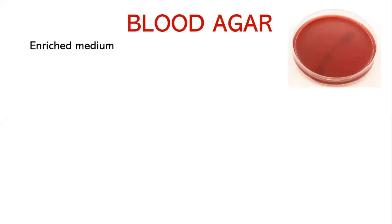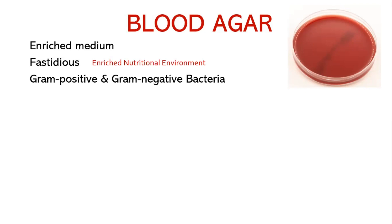Blood agar is an enriched medium used to culture bacteria that do not grow easily. Such bacteria are called fastidious as they demand a special enriched nutritional environment compared to routine bacteria. Both gram-positive and gram-negative bacteria grow on it. It is also a differential medium as it allows the detection of hemolysis. Bacteria are divided into three categories on the basis of hemolysis.